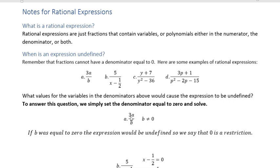For the first one, 3a over b, we set b equal to zero. We're done because we can't let b be zero—a zero in the denominator would cause the expression to be undefined. Since if b was equal to zero the expression would be undefined, we say that zero is a restriction. Sometimes they ask when is this undefined, or list the restrictions—it's the same question.